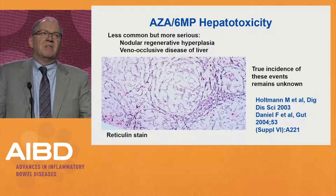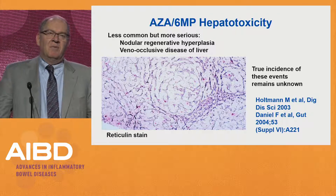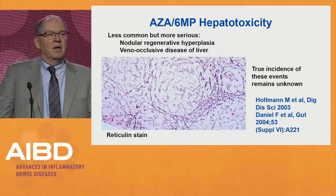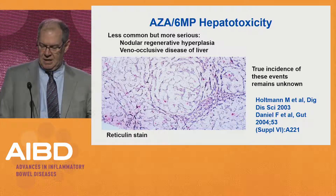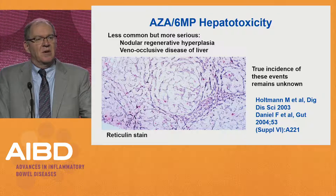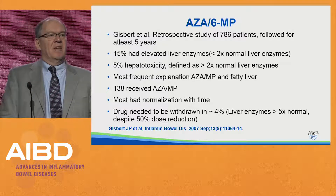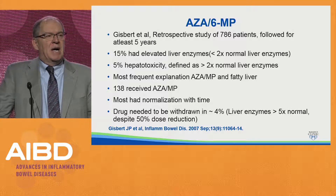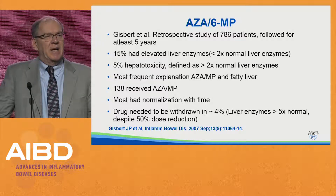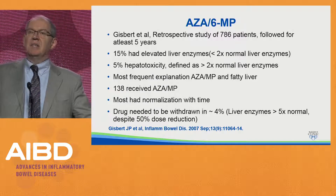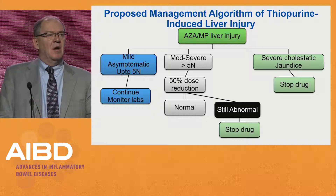The true incidence of these events is unknown; in my practice it's uncommon, but I've definitely seen patients with azathioprine-induced chronic liver injury. Fortunately, if you recognize it early enough and stop the drug, patients become well compensated and can stay stable for a long time. A study from Spain looking at over 700 patients found that 15% had elevated liver enzymes at some point, with 5% meeting hepatotoxicity criteria at greater than two times the upper limit of normal. The most frequent explanation was the thiopurine, and most patients normalized with time, but in some cases the drug had to be discontinued.